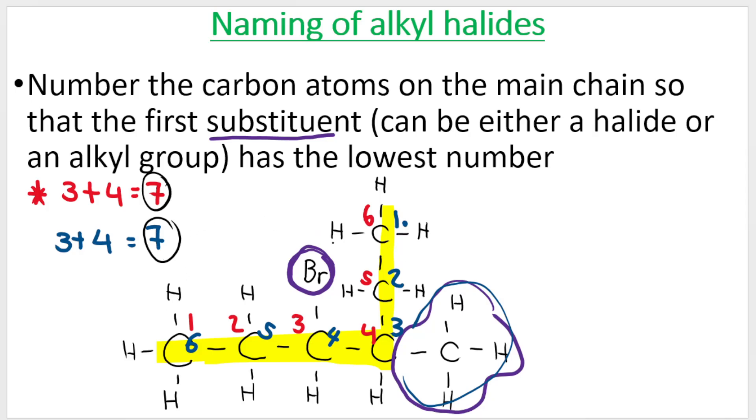So which numbering is correct? Remember, when we name a haloalkane, the substituents must be placed in alphabetical order. This substituent is a bromo, and this branch is a methyl. Which one comes first alphabetically? B comes before M. So that means we must ensure that the Br has the lowest possible number. So obviously, the red numbering means I get a lower number.